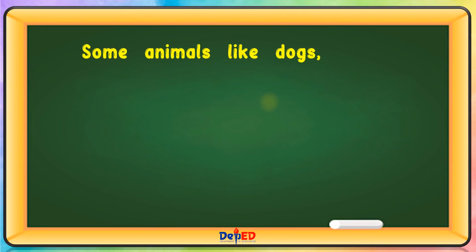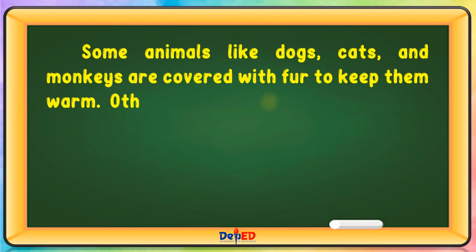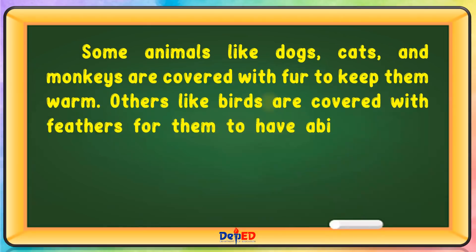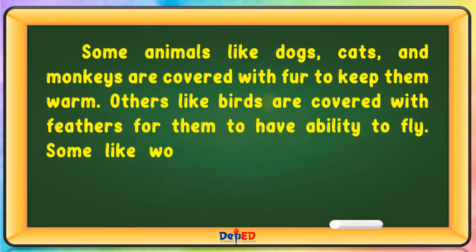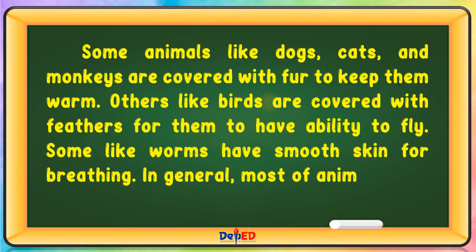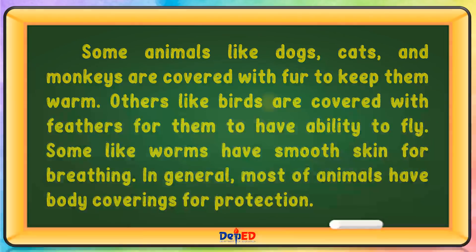Some animals, like dogs, cats, and monkeys, are covered with fur to keep them warm. Others, like birds, are covered with feathers for them to have the ability to fly. Some, like worms, have smooth skin for breathing. In general, most animals have body coverings for protection.